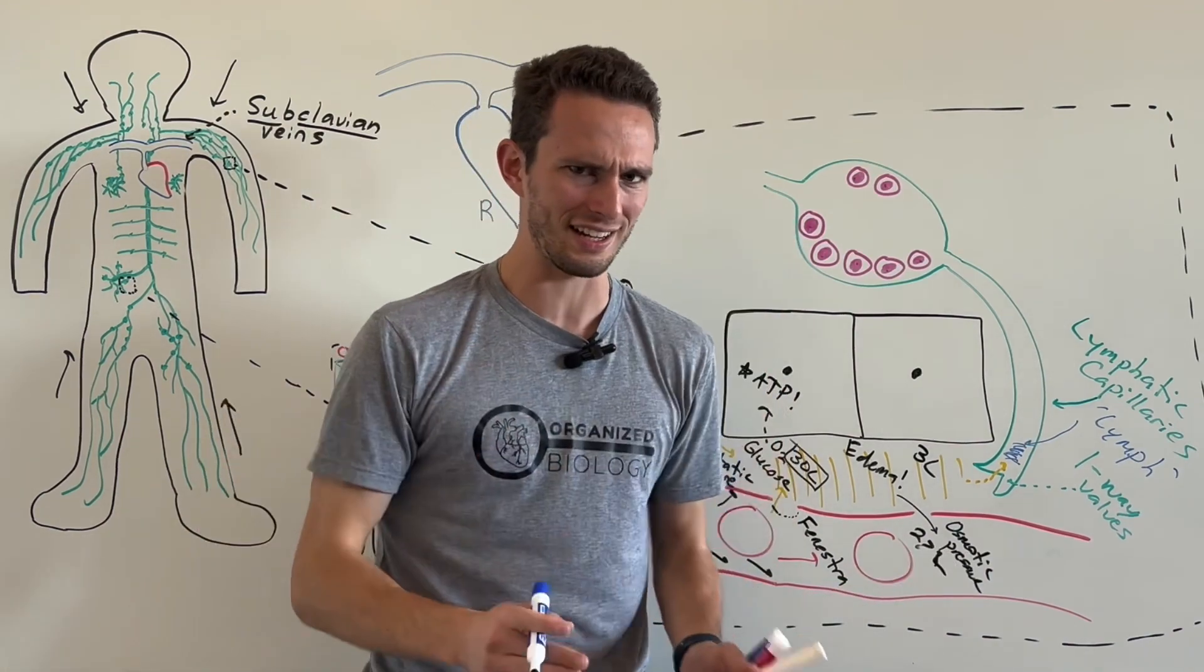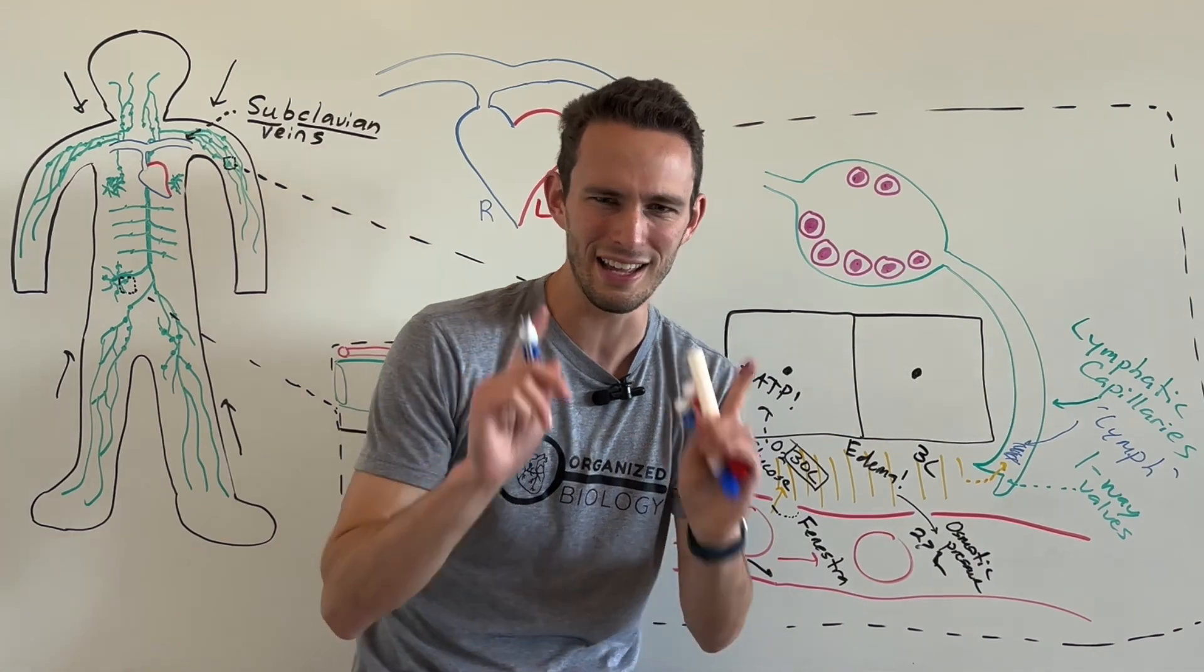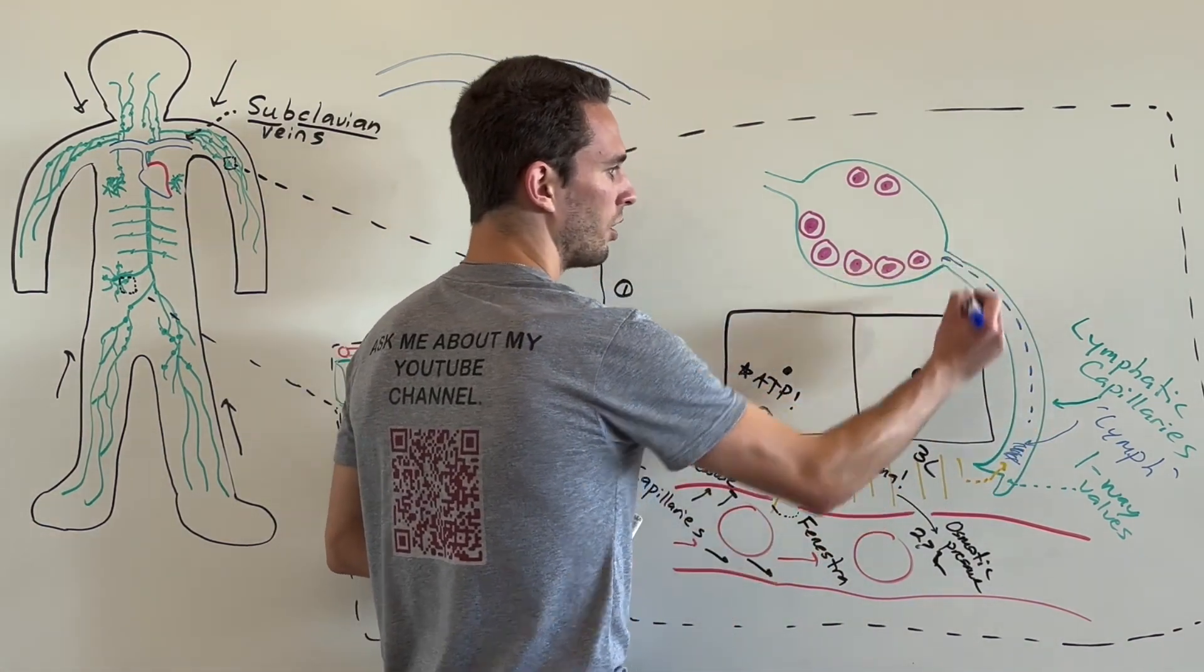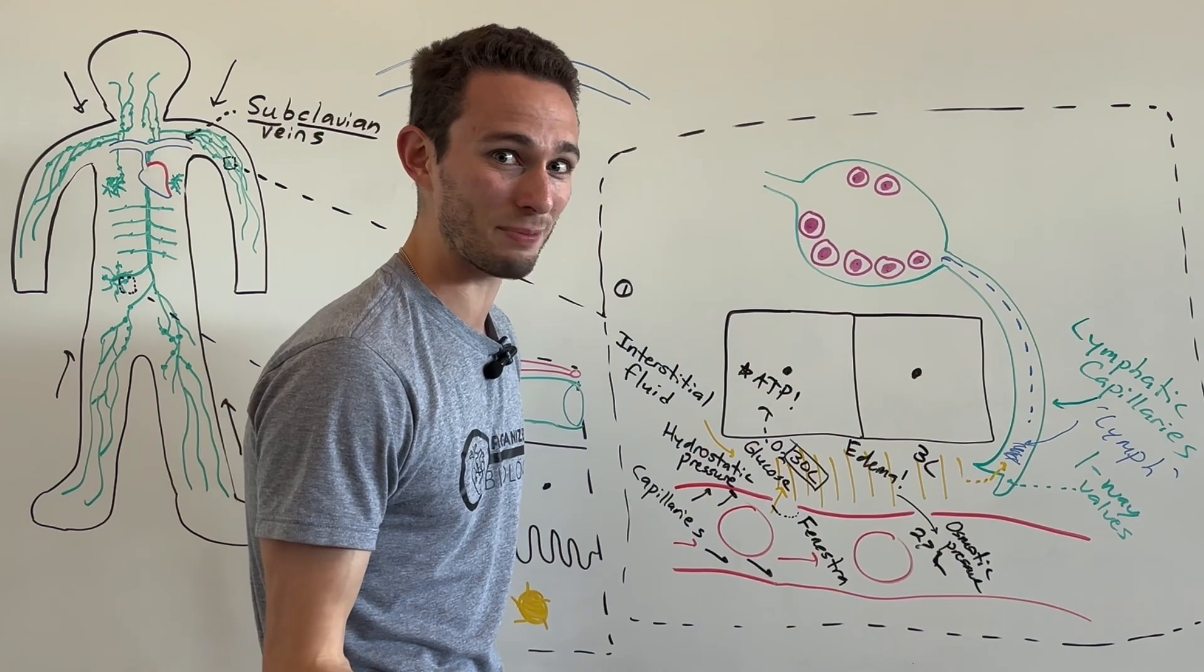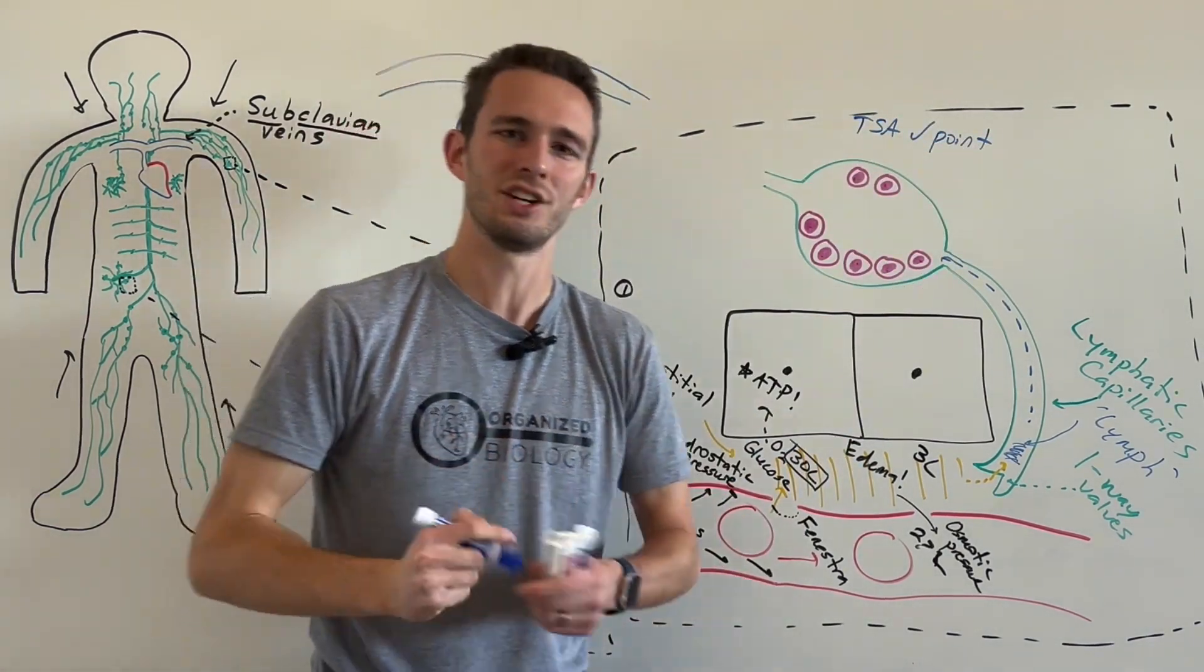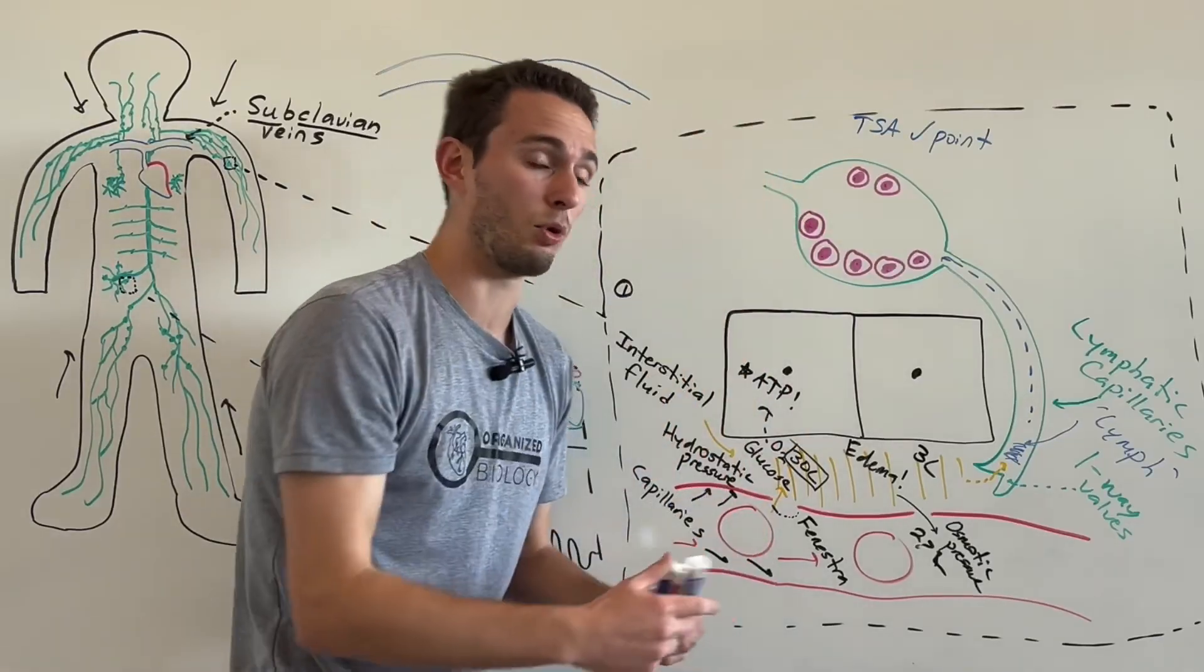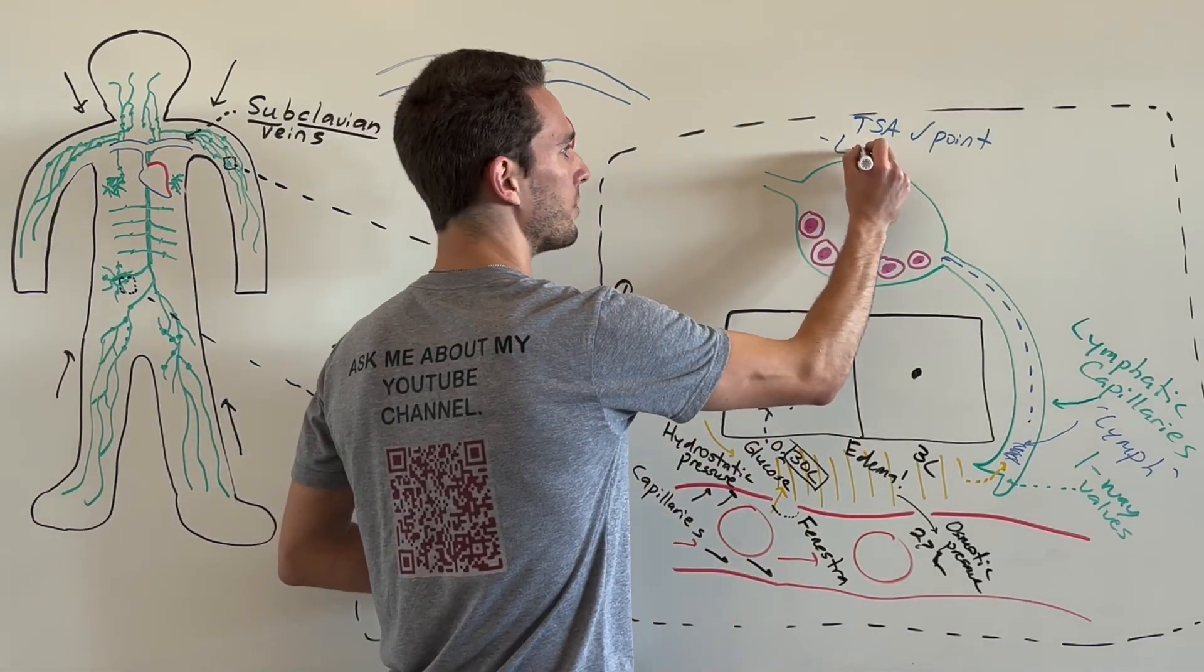Okay? So, we need a one-way ticket back to the subclavian vein. So, we've got to go to the airport, right? And at any good airport, we will eventually reach what's called the TSA checkpoint, right? Now, in your body, there are no actual TSA agents patting you down. That would be weird. But these TSA checkpoints are actually called your lymph nodes.